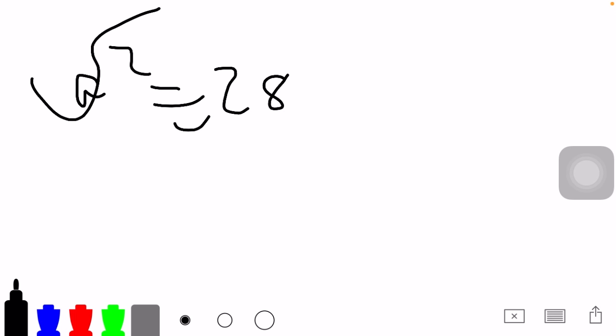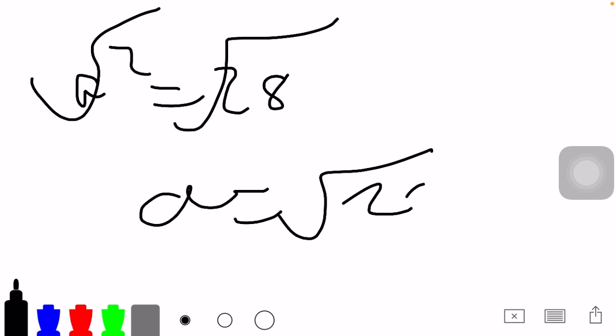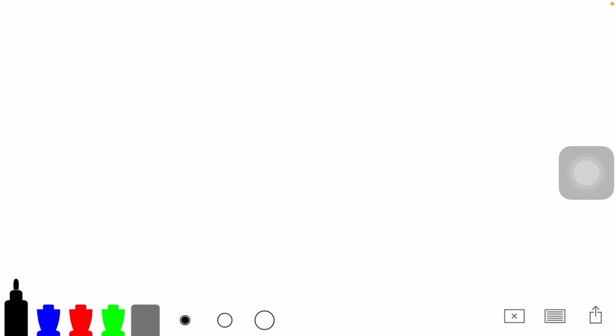So, in this case, A is the square root of 28. Now, let's try another example. Another example, let's just say that we know that this side is 1, and then this side here is, let's just say it is 2.